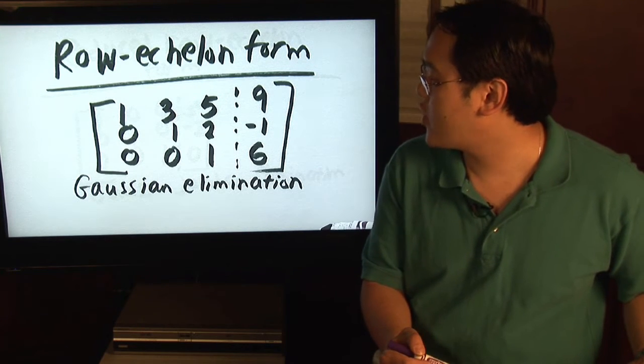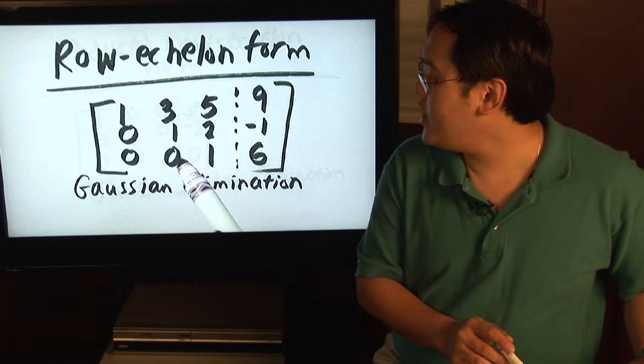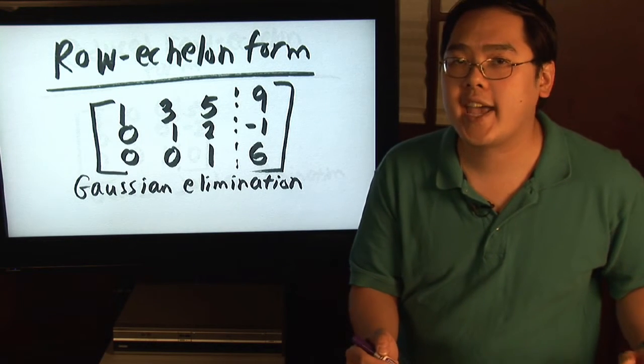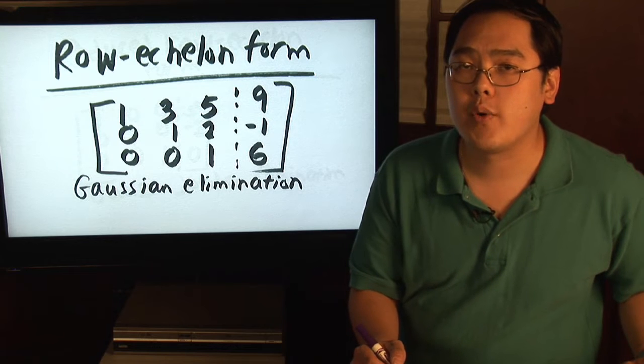And here's a structure as to how that works. You may notice here that there's a series of ones that are in a diagonal fashion. That's an example of row echelon form.